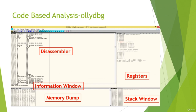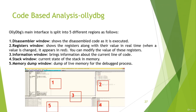Before the demo, it's good to know the windows of OllyDbg. For people who did a lot of programming, this might look very familiar. You have the disassembler window, information window, memory dump, registers, and the stack window. The disassembler window shows the disassembled code as it's executed. The register window shows the values of registers at a certain point. The information window gives exact information related to the current line in the code.